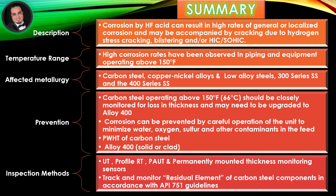Prevention: Carbon steel operating above 150 degrees Fahrenheit should be closely monitored for loss in thickness and may need to be upgraded to Alloy 400. Corrosion can be prevented by careful operation of the unit to minimize water, oxygen, sulfur, and other contaminants in the feed. PWHT of carbon steel and Alloy 400 solid or clad are also recommended. Inspection methods include UT, Profile RT, PAUT, and permanently mounted thickness monitoring sensors. Track and monitor residual elements of carbon steel components in accordance with API 751 guidelines.